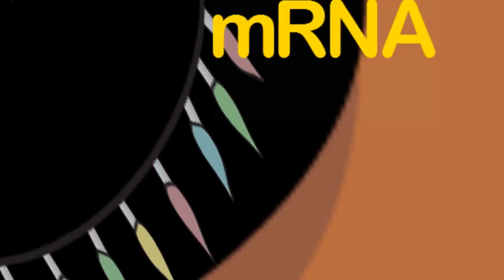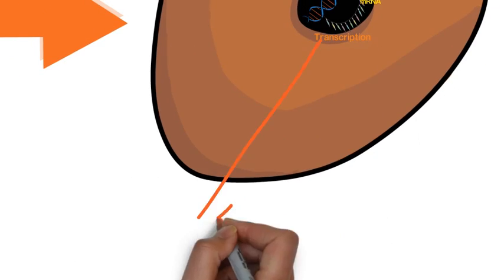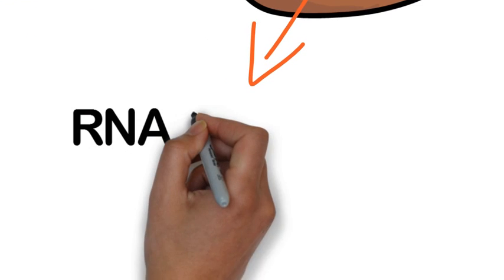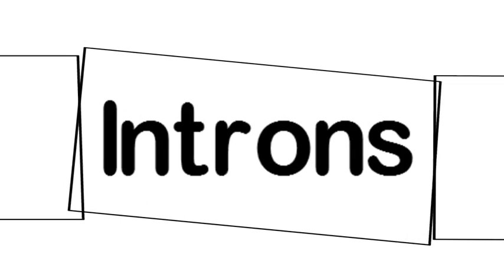This is the messenger RNA that is formed. Now during RNA processing, the DNA strand which is seen here is made up of exons, which code for amino acids, and introns, which do not code for amino acids.